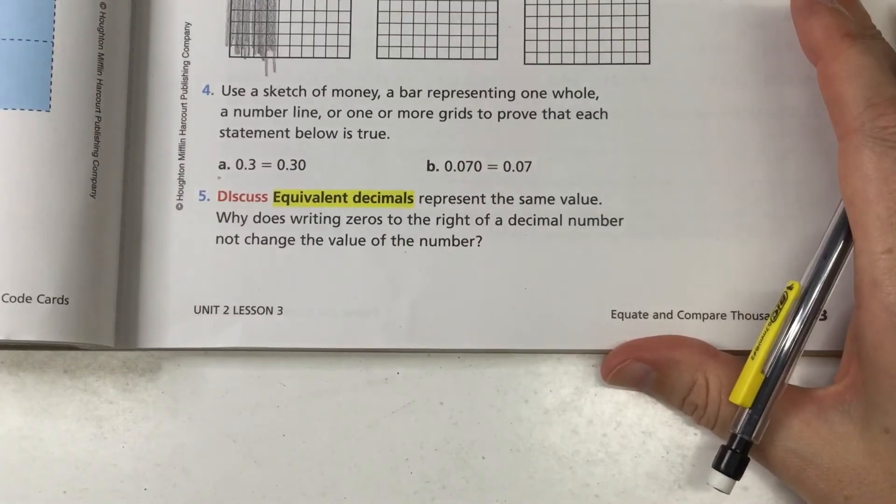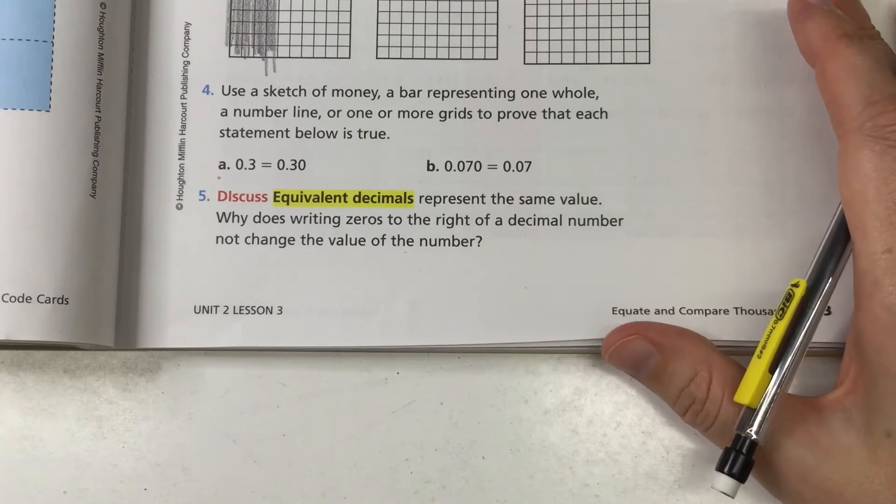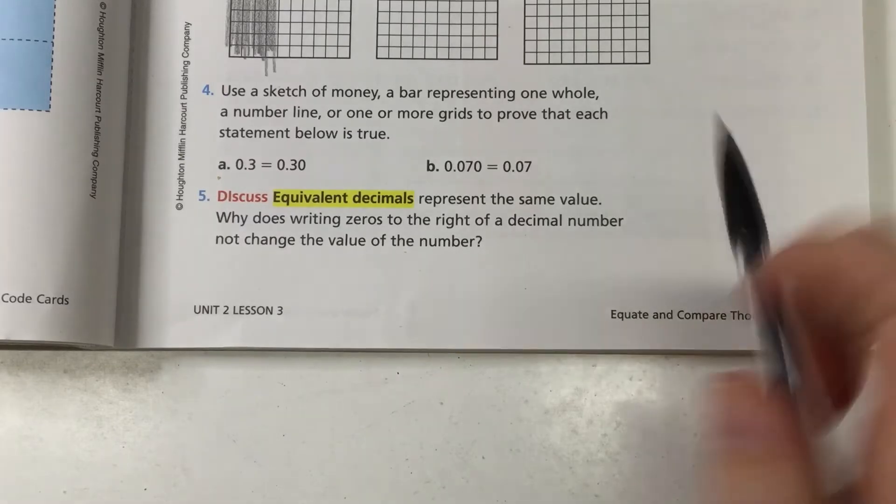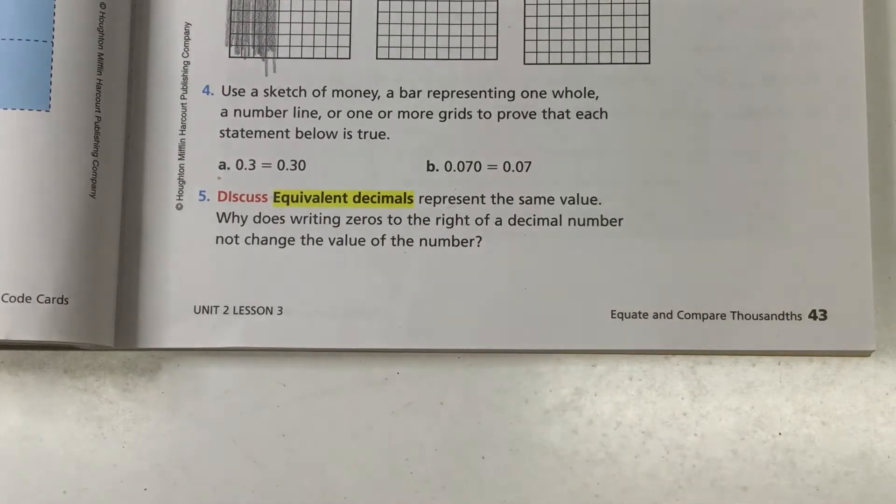Use a sketch of money, a bar representing one or one of the more grids to prove that each of the statements below is true. So you can decide how you're going to draw that to show that you can choose either A or B to show that they are equal, that that statement is true.